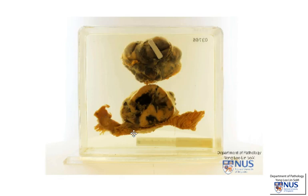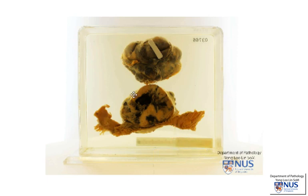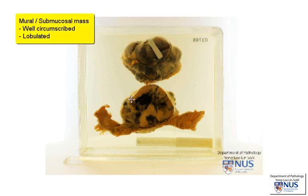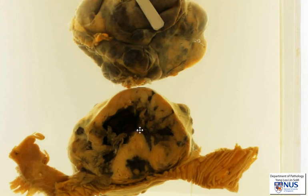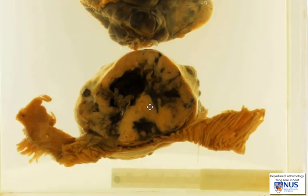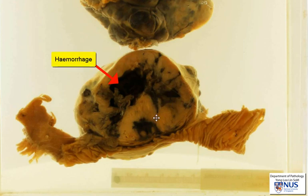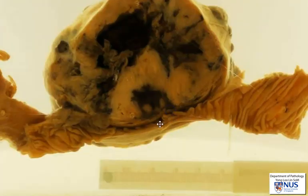This is a specimen which shows a segment of small bowel, and here we're looking at the mucosal surface. There is a large, relatively circumscribed, somewhat lobulated mural mass. This mass is rounded or spherical, and it has a tan cut surface with these patchy, dark, blackish areas of hemorrhage. Looking at the mucosa, we can see that it's still intact, overlying the mass.